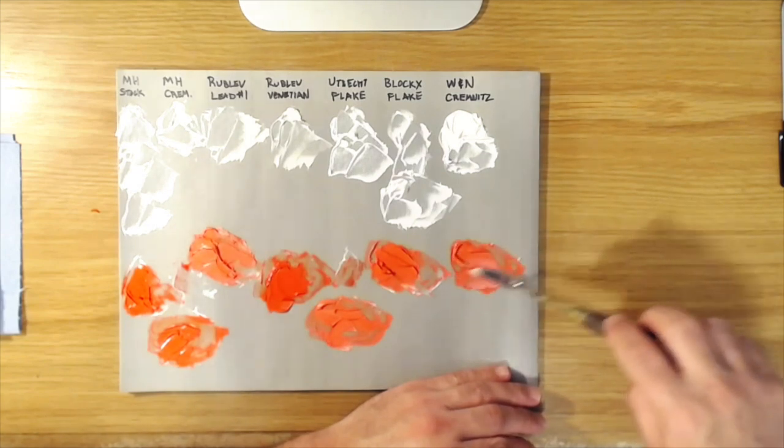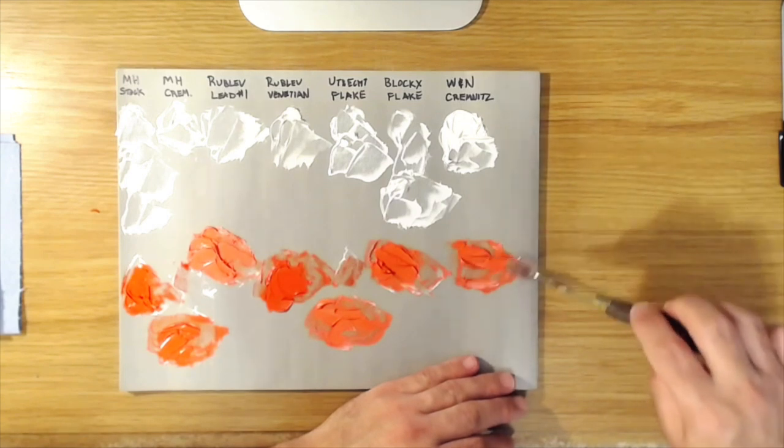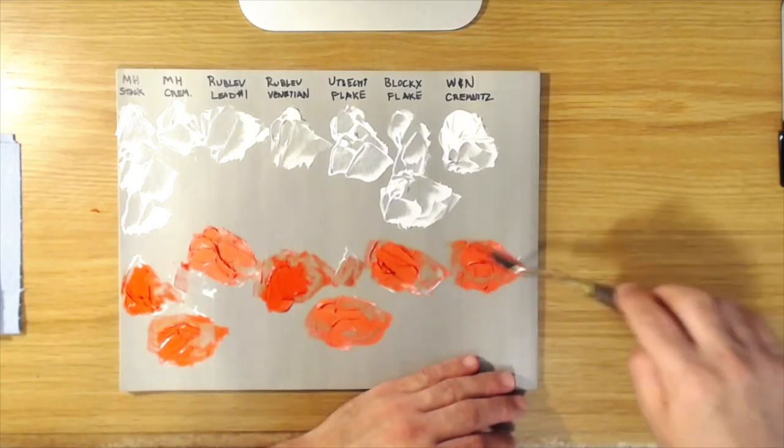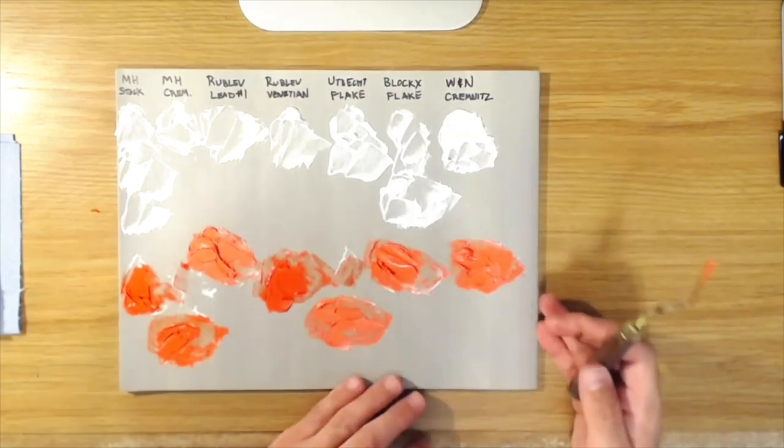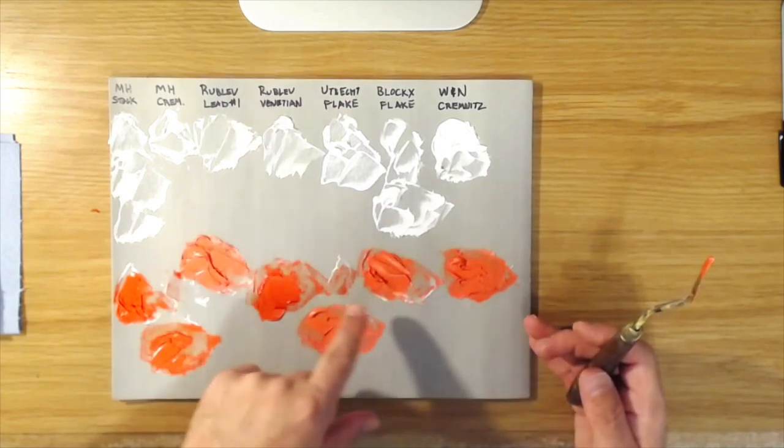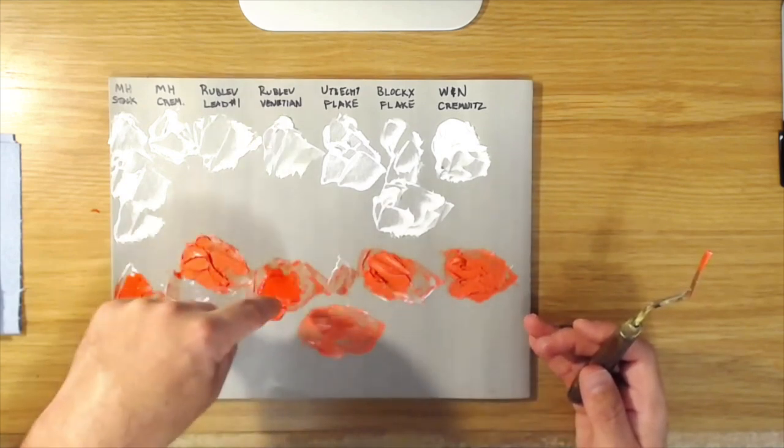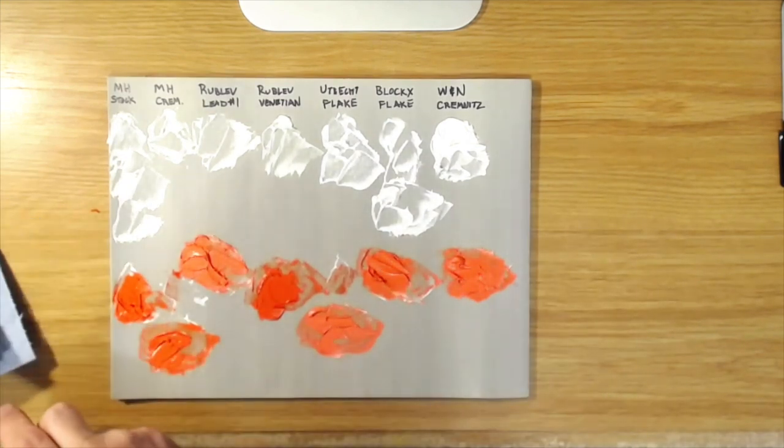And I'm seeing again, as with the Utrecht lead white, it's just a tiny bit, tiny tiny bit chalky compared to some of the other, compared to some of the other, it's not real bad, but it's just a tiny bit compared to some of the other more expensive lead whites.